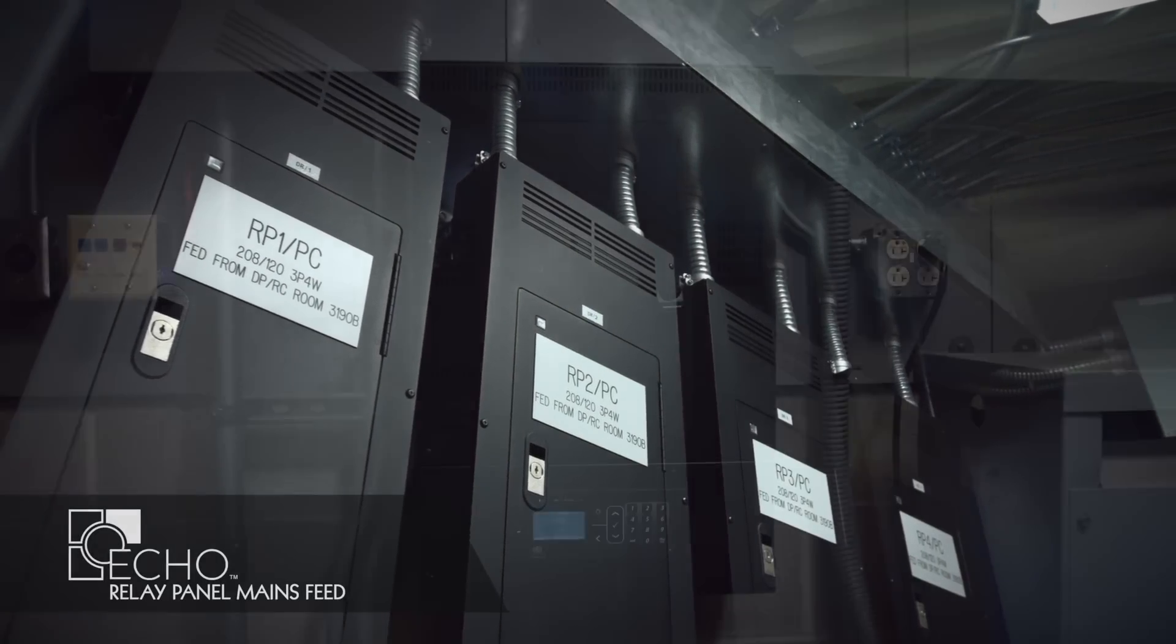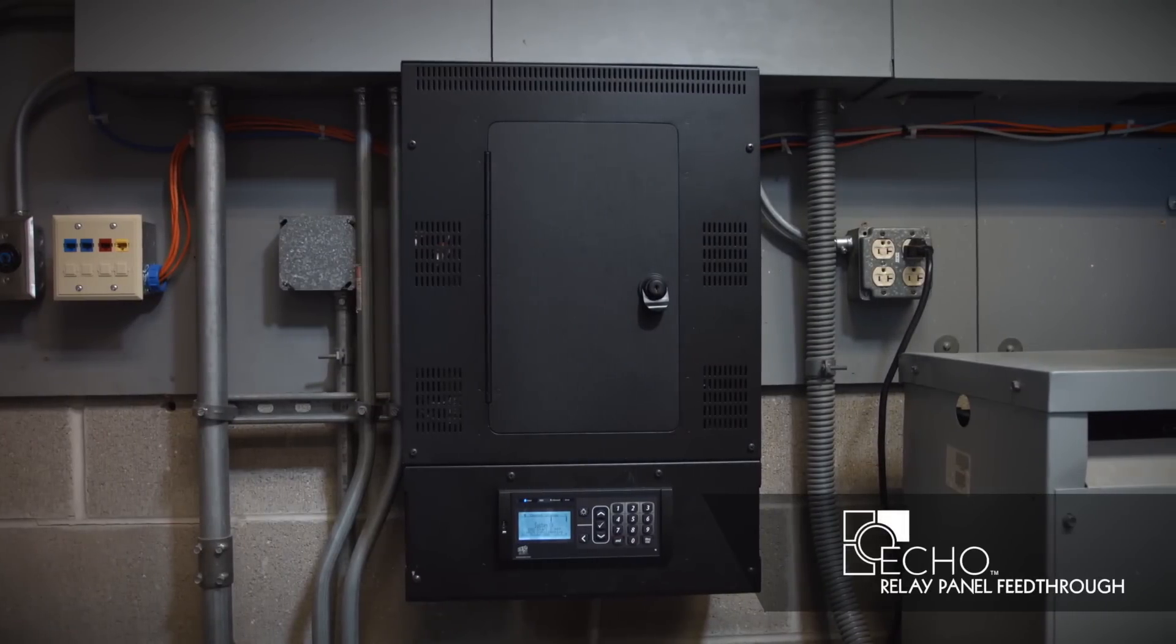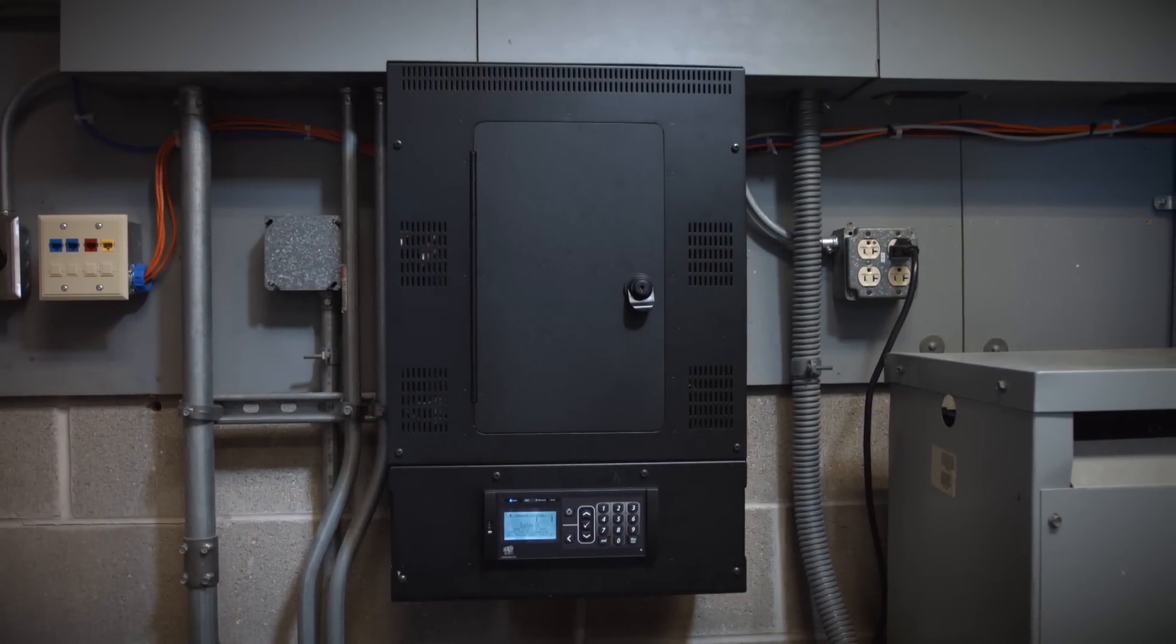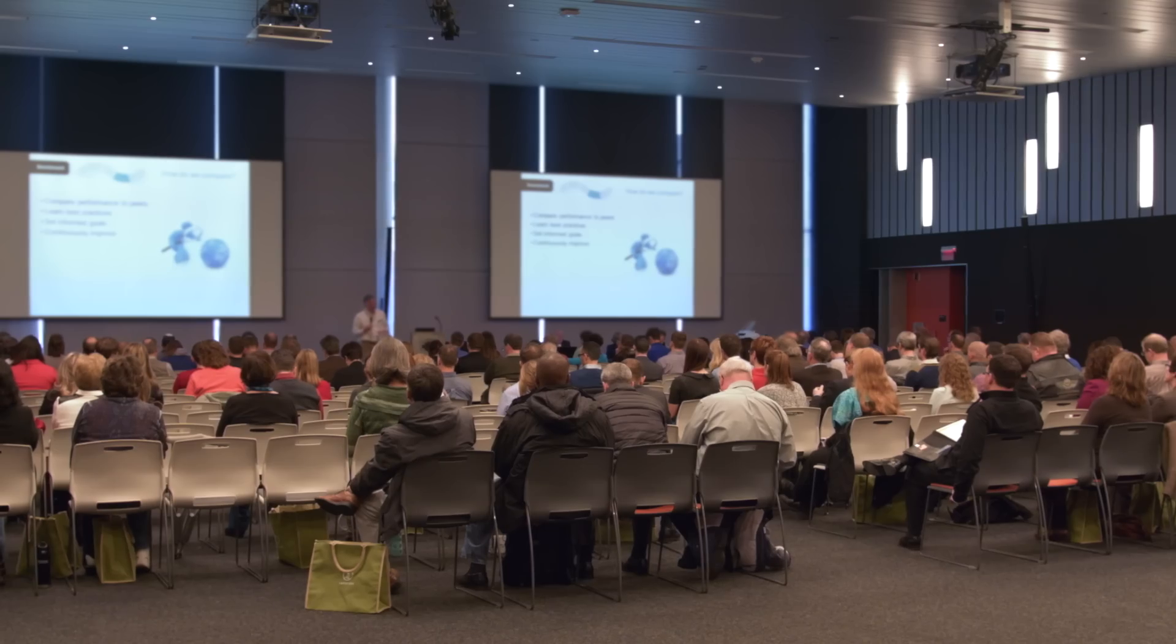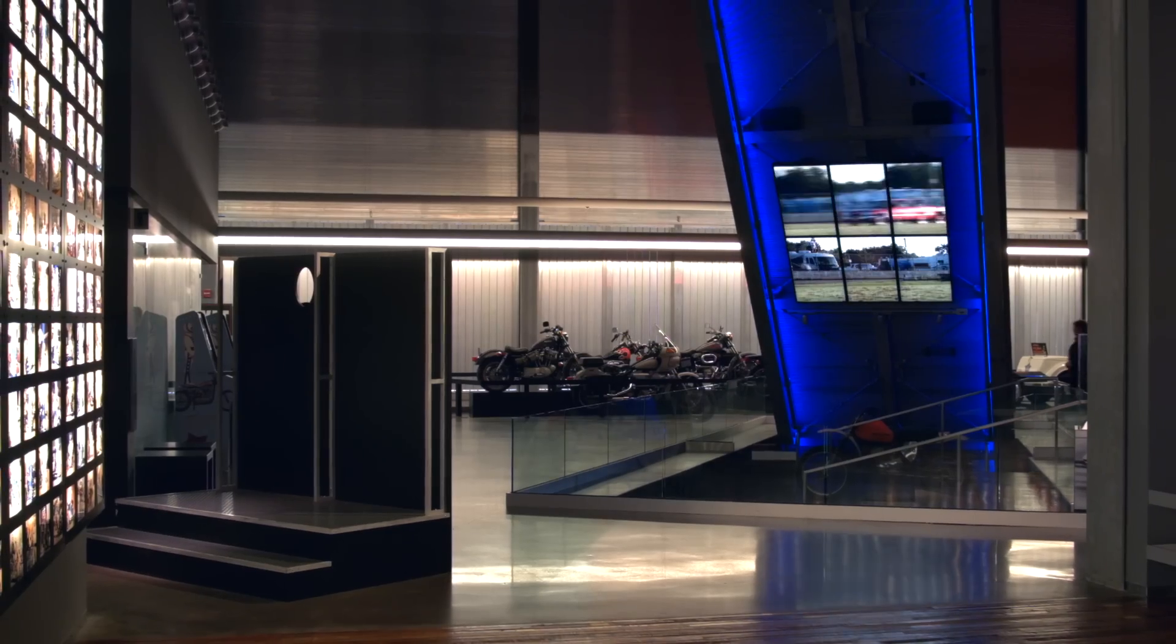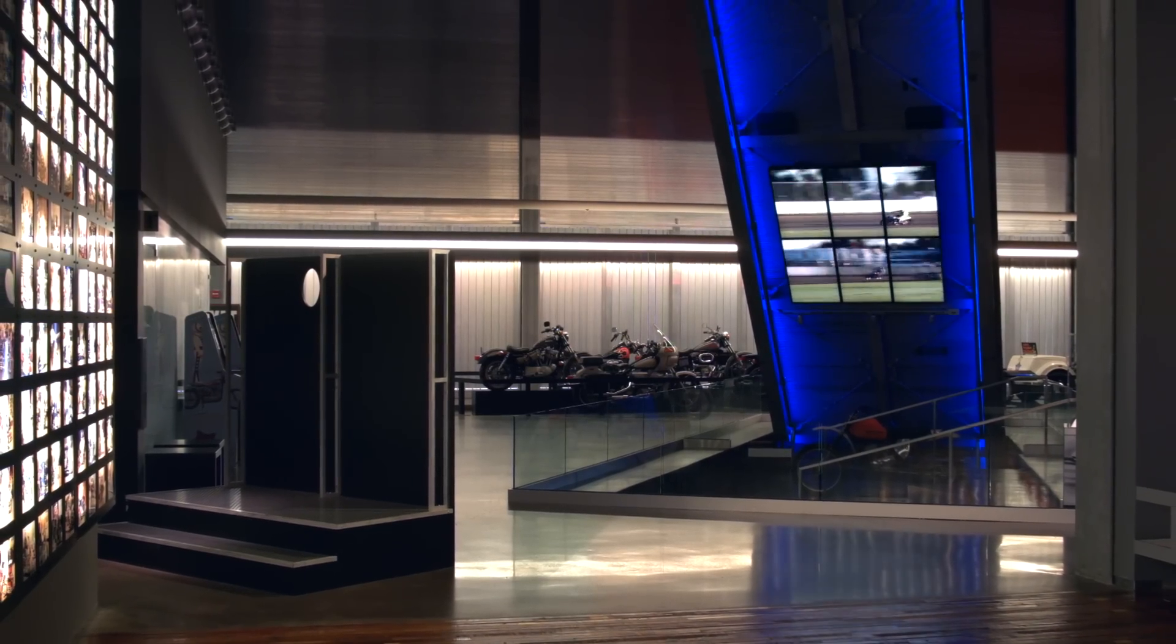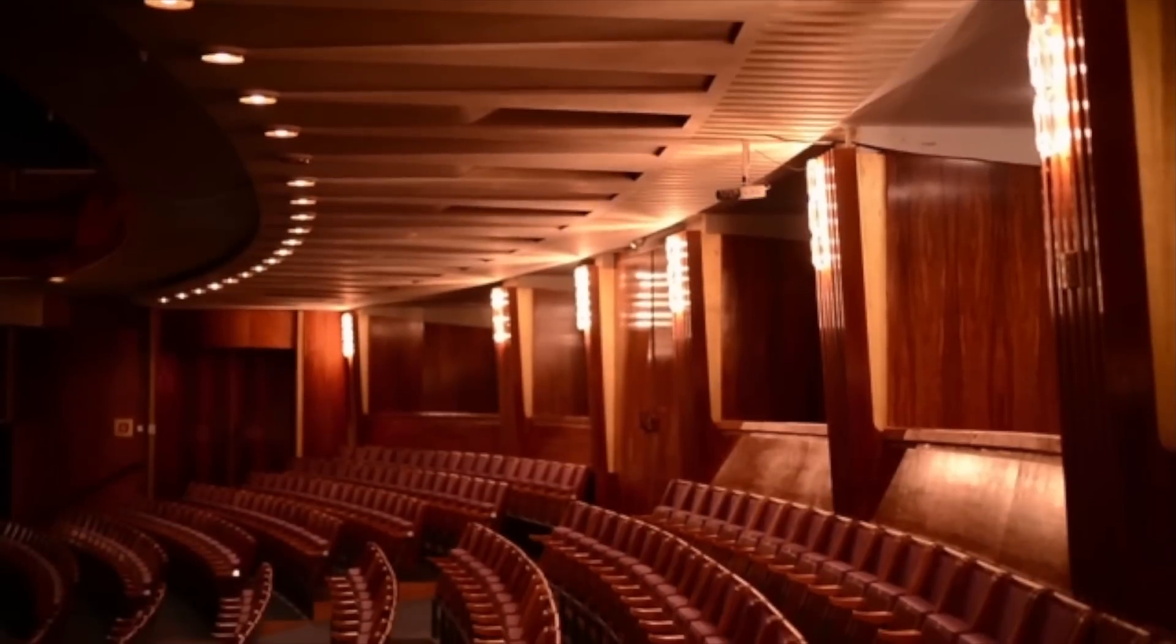Both the mains fed and feed-through models of the echo relay panel are ideal for mid to large size spaces such as hotels, conference centers and other commercial use buildings where centralized network control is used to tie building systems together. Even though the name says relay panel, ETC now offers dimmer modules to give maximum control options in a single system.